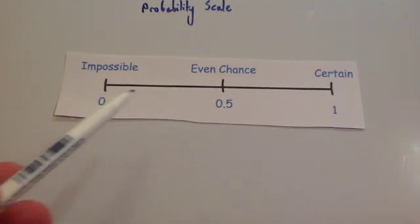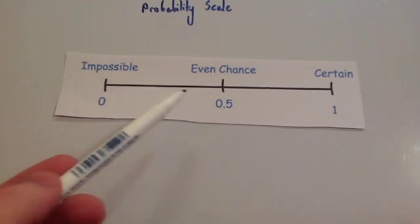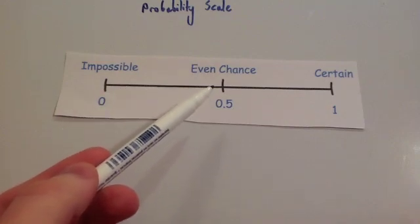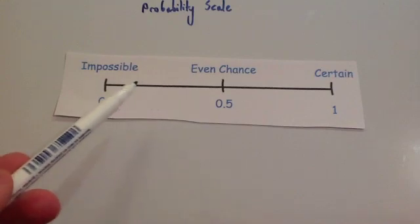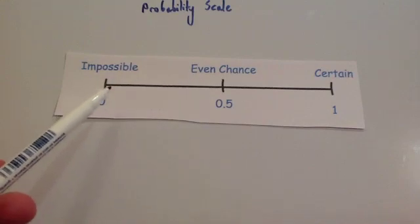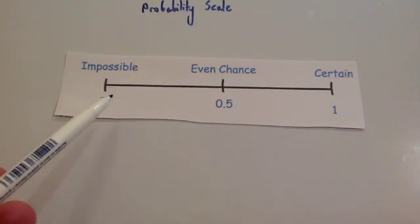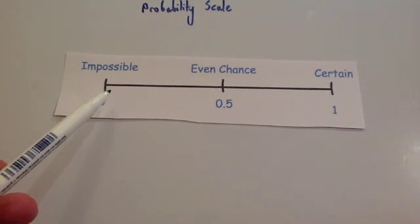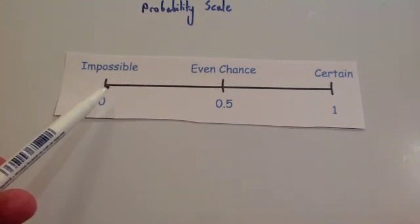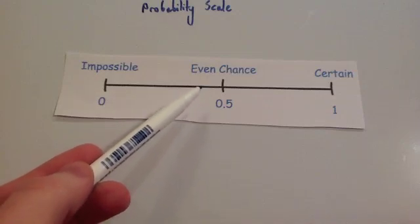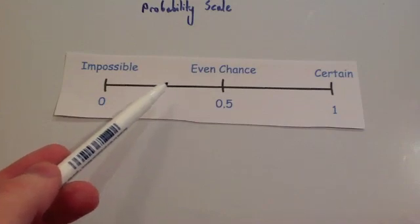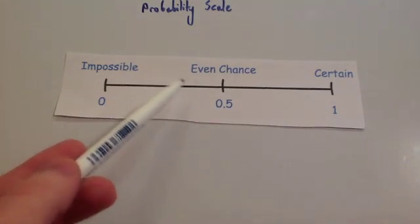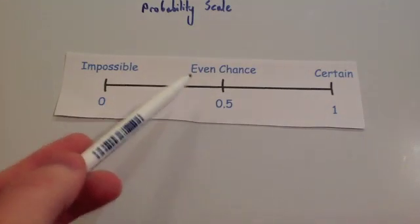Anything between 0 and 0.5 is unlikely to happen. If it's just below even chance, it's slightly unlikely. If it's nearly down at zero, it's very unlikely — something like winning the lottery, nearly impossible but not quite. Something like it being rainy on a summer day is unlikely to happen, though in England it might be a bit higher.